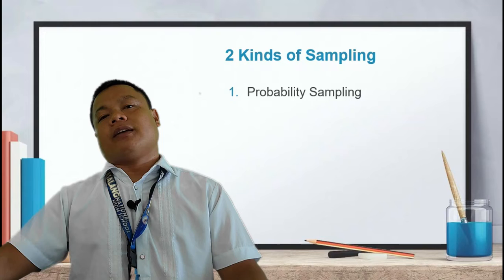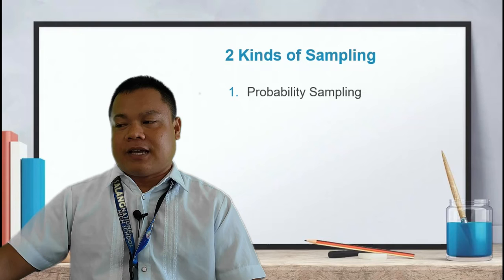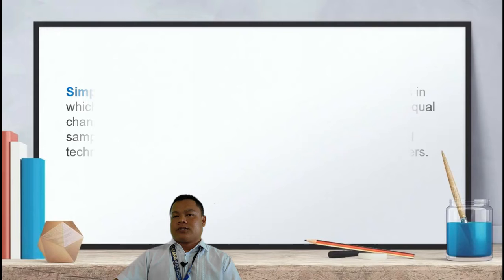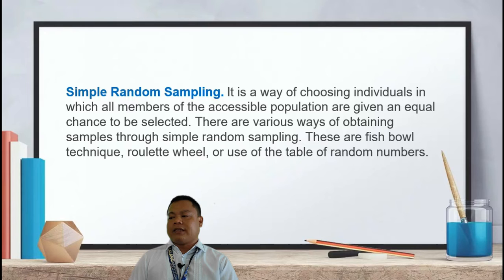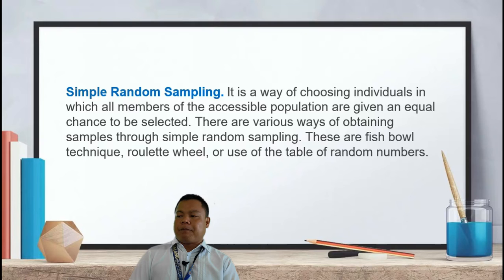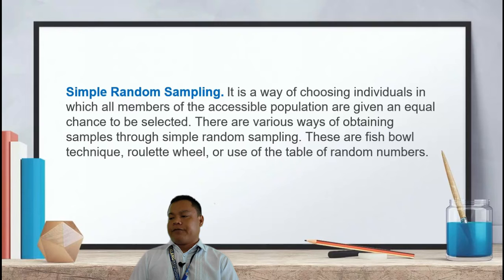There are two major types of sampling in quantitative research: probability sampling and non-probability sampling. Under probability sampling, the first type is simple random sampling — a method of selecting individuals where all members of the accessible population are given an equal chance of being chosen. Different techniques include the fishbowl technique, lottery, or use of a table of random numbers.